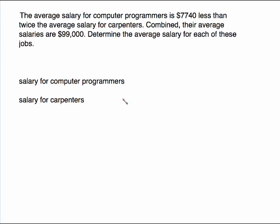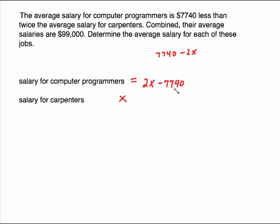One of these has to be the plain old variable. Something is told about computer programmers, but you know nothing about the carpenters — that's where we begin, and that's who gets the x. Going back to the sentence: the average salary for computer programmers is $7,740 less than twice the average salary. Remember, 'less than' has to go to the back of the sentence — so it's twice the average salary minus $7,740. A common mistake is to write $7,740 minus 2x. If you want to make something $7,740 less, you have to subtract $7,740 from the 2x.